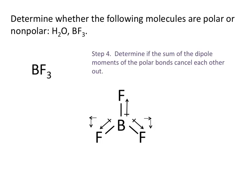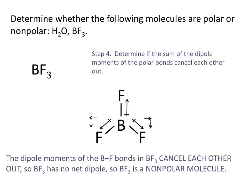So overall, if you were to add these vectors up head to tail, they would cancel each other out. Because the dipole moments of the boron-fluorine bonds in BF3 cancel each other out, BF3 has no net dipole and is a nonpolar molecule.